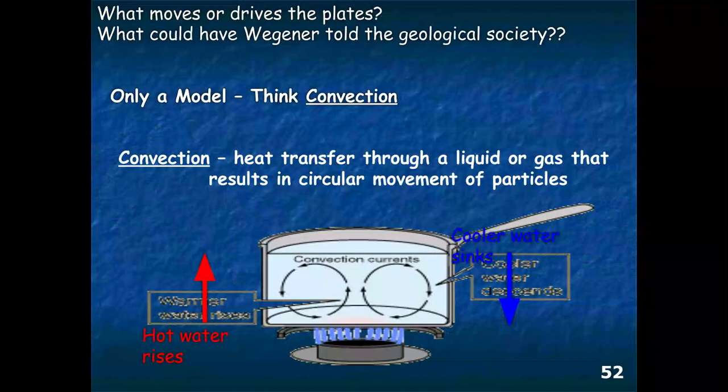We're going to use the concept of convection. Convection is a process in which heat is transferred through a liquid or a gas, and this typically results in circular movement of particles. Recall that we use the word conduction to describe heat transfer through a solid. So convection is heat transfer through a liquid or gas, resulting in circular movement of particles.